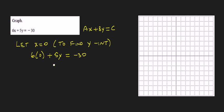Well, 6 times 0 is just 0, so we have 5y equals negative 30. And then we divide both sides by 5, and we get y equals negative 6.